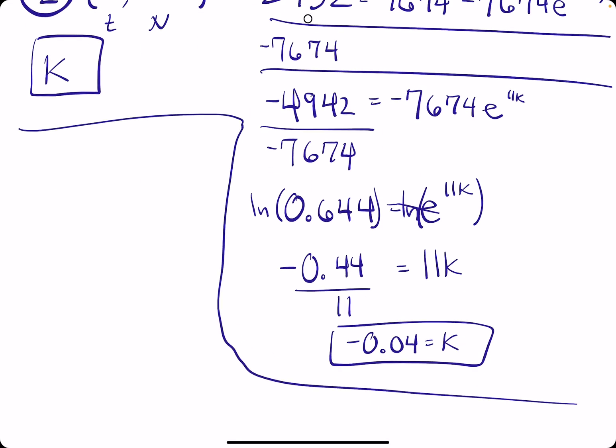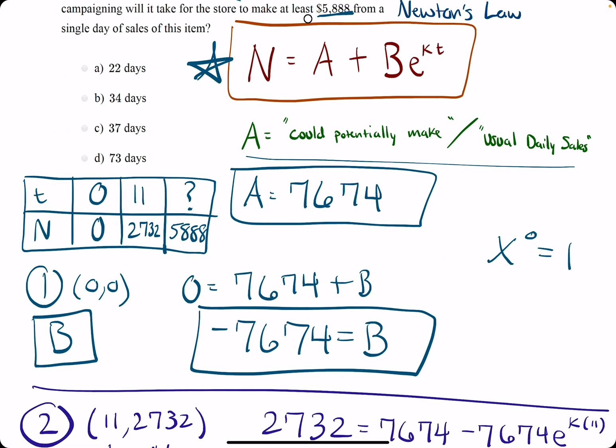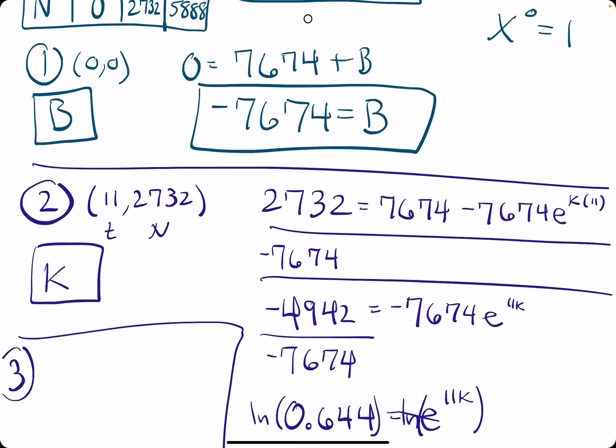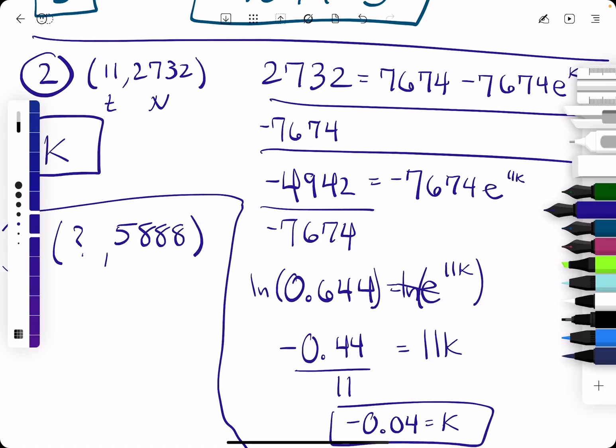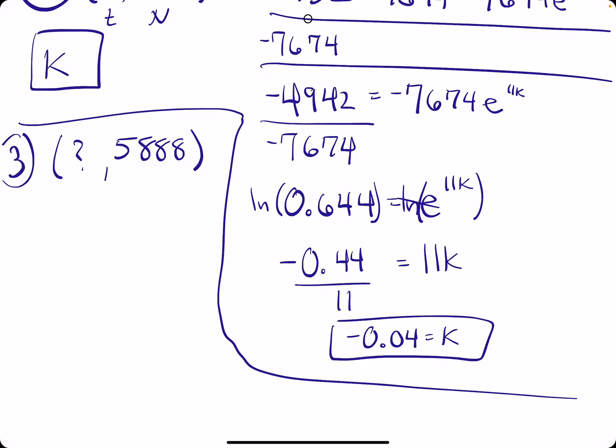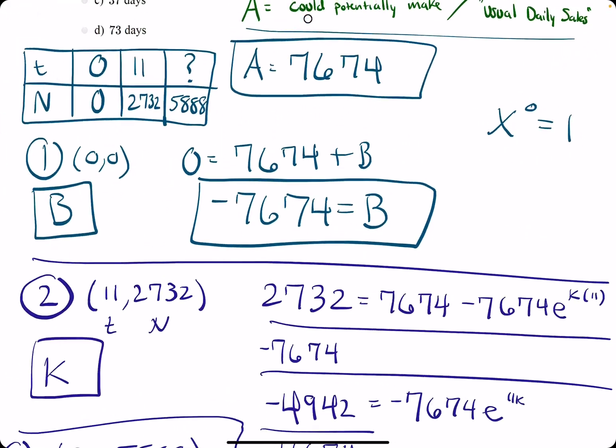Third step is to set up the same equation, but now with N being 5888. Our T value is a question mark, and we have N value of 5888. We plug in all the values we know: our K, our B, and our A.